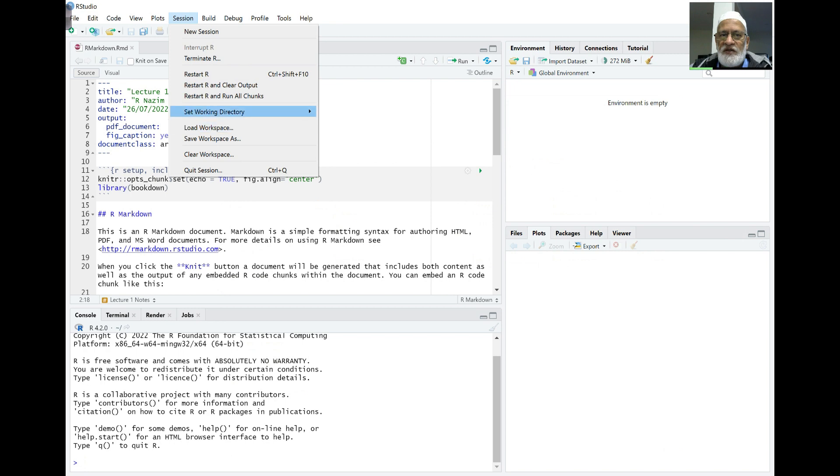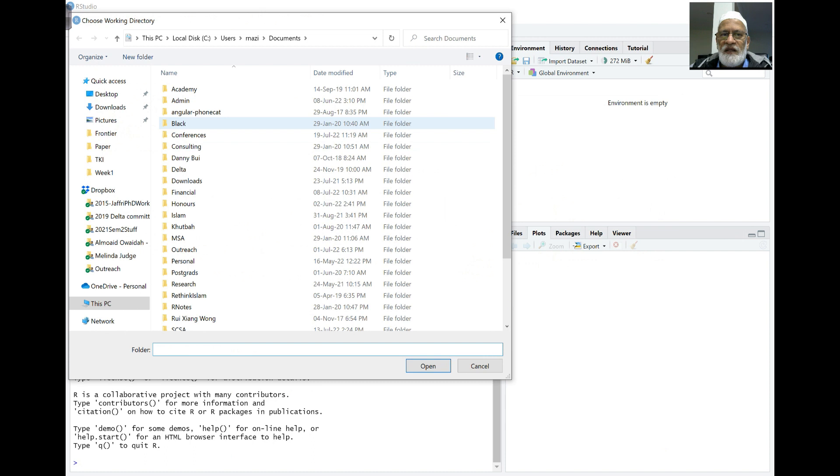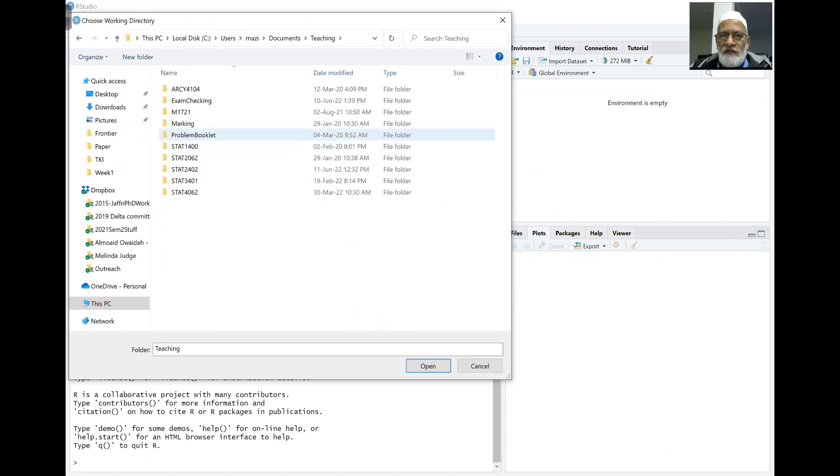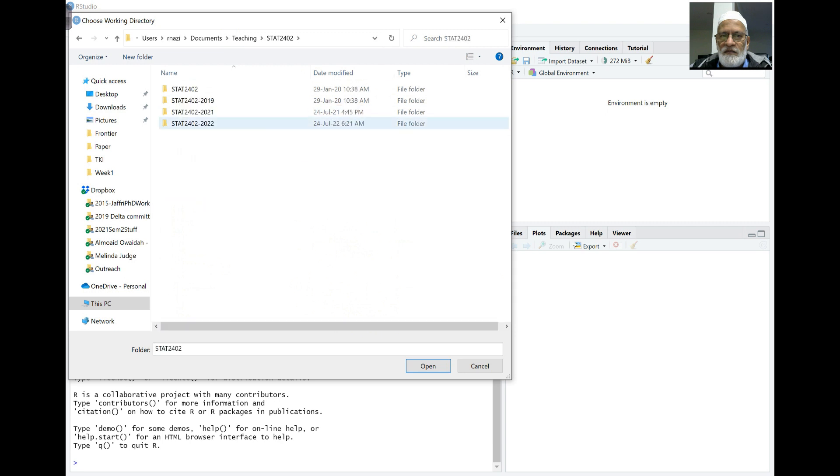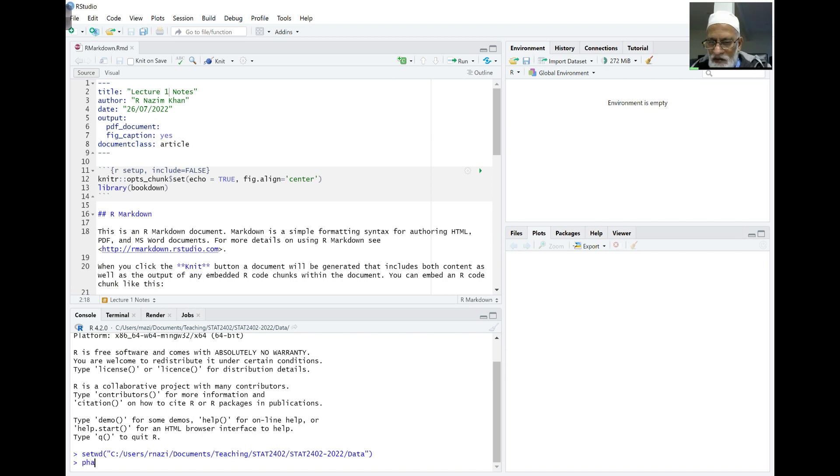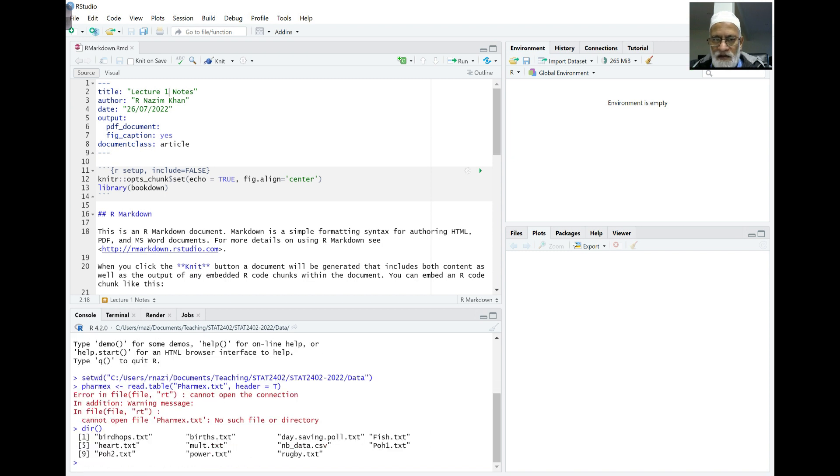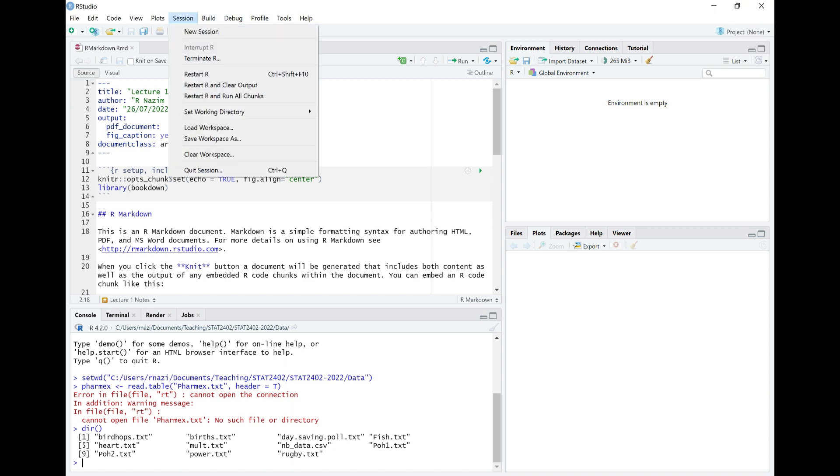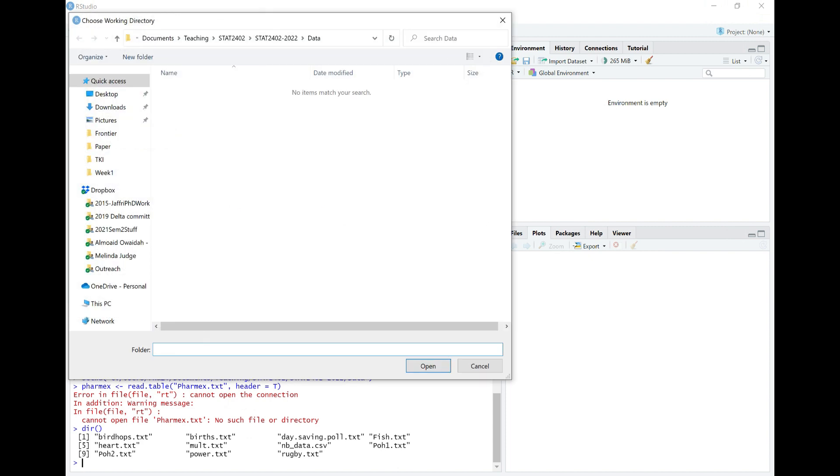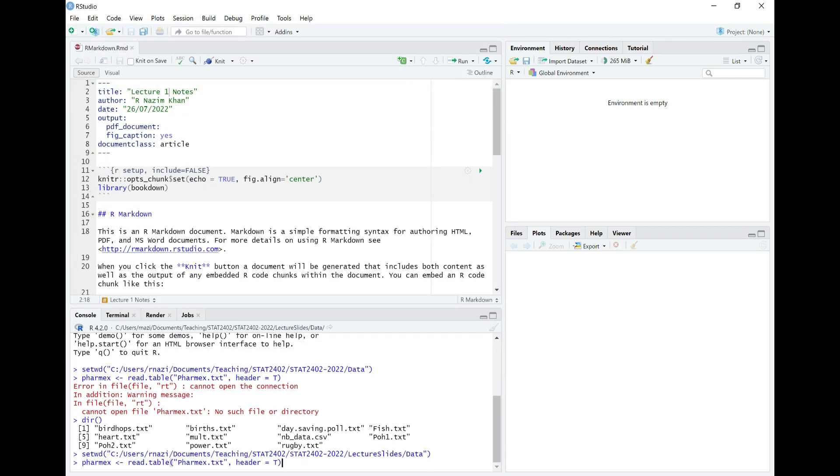So if I can go quickly to my R and see if I can get this working for me. Let me see if I can find my data file here. There's Pharmex over there. So let me set my session to choose the directory. So I can say Pharmex becomes read those table. And it's going to be lecture slides data. That's what I want.